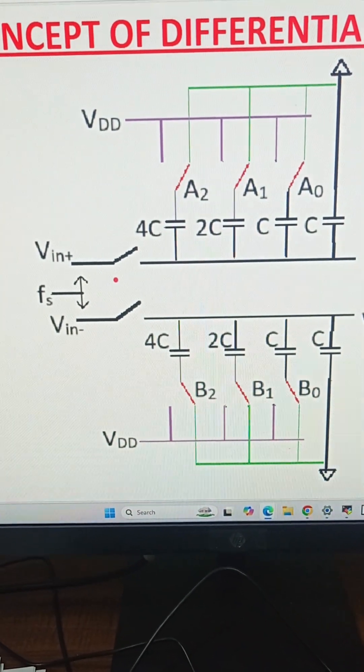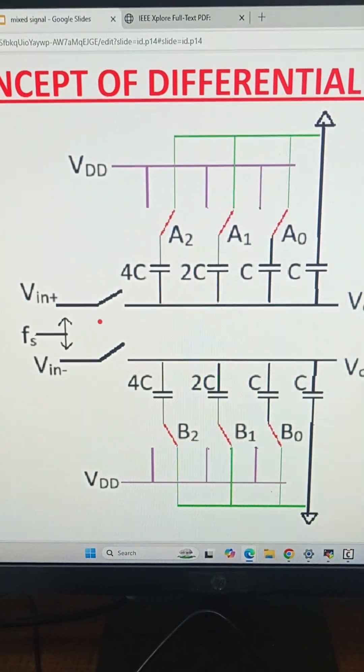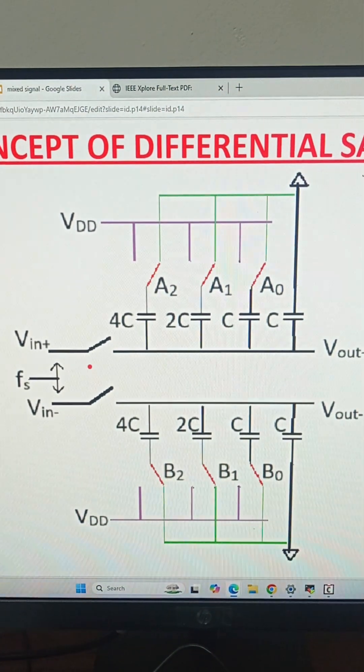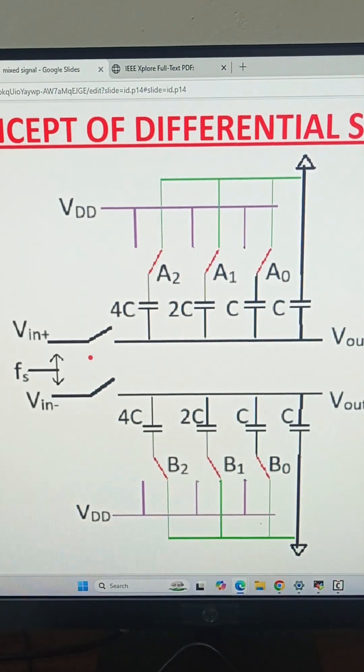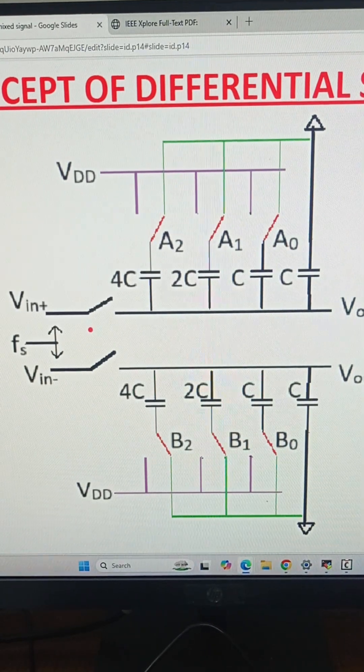We can see that on the left hand side we have two switches which are controlled by a clock of frequency f_s. These implement the track and hold circuit and are used to sample the inputs V_in+ and V_in-.